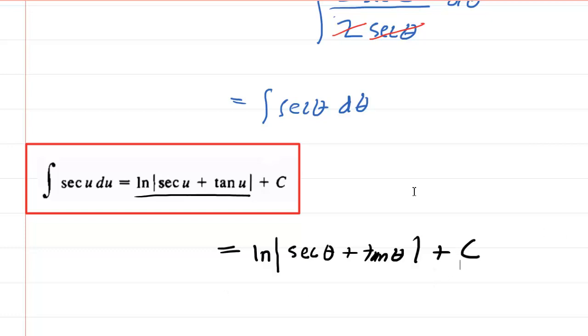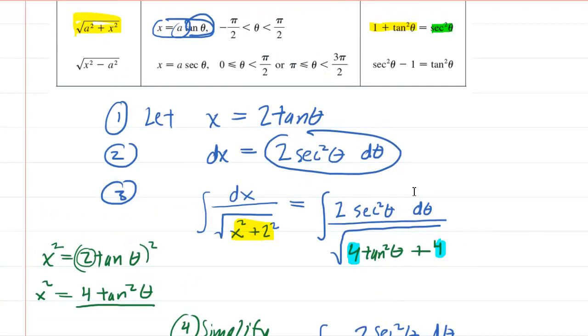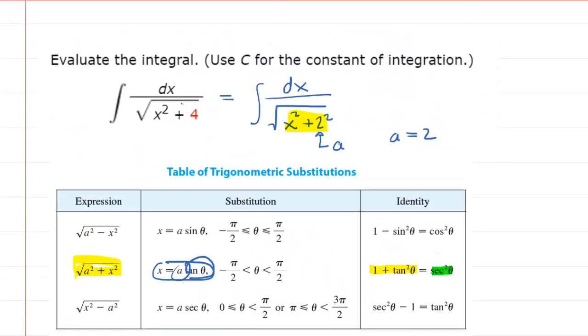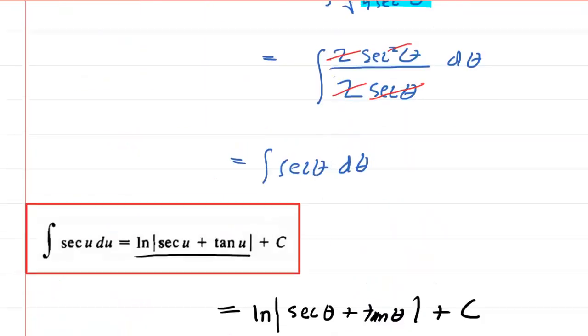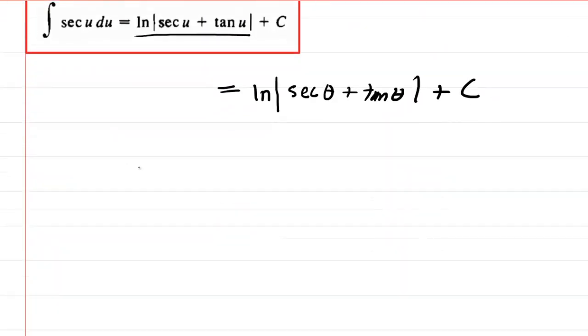Now, we're not done with the problem yet because if you go all the way back to it, the original variable in the problem was x, not theta. So we cannot leave our answer in terms of theta. We have to revert it back to being in terms of x. And to do that, we recall that we had let x equal 2 tan of theta.